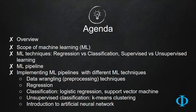Also, you will get the idea of unsupervised classification with k-means clustering. And we will give you an introduction to artificial neural networks. For all these things, we are going to use scikit-learn as our machine learning library and Python as the language.